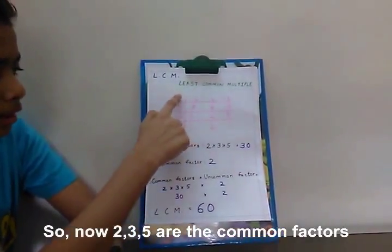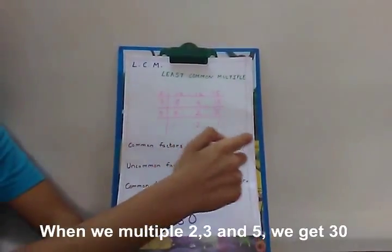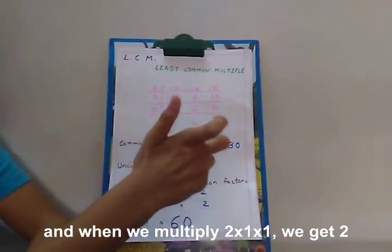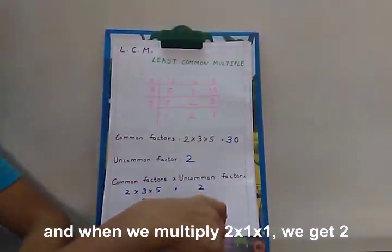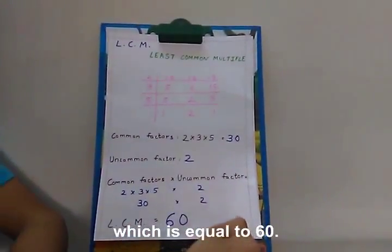So now 2, 3, and 5 are the common factors. When we multiply 2, 3, and 5, we get 30. And when we multiply 2 into 1 into 1, we get 2. Therefore, LCM would be 30 into 2, which is equal to 60.